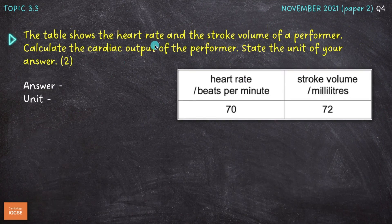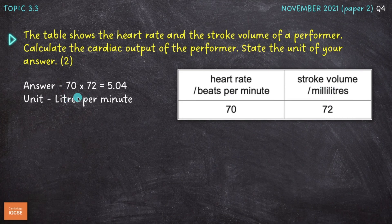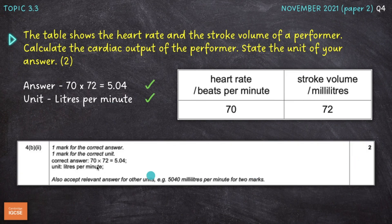The next question shows a table with the heart rate and stroke volume of a performer. Calculate the cardiac output and state the unit for two marks. The equation is: cardiac output equals heart rate multiplied by stroke volume. So 70 beats per minute multiplied by 72 millilitres equals 5.04. The unit for cardiac output is litres per minute. The mark scheme confirms this, noting that millilitres per minute would also have been accepted.